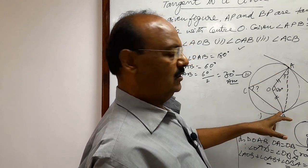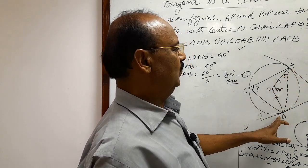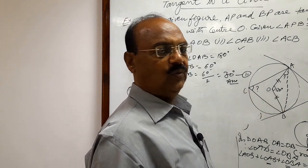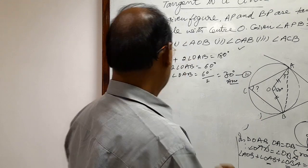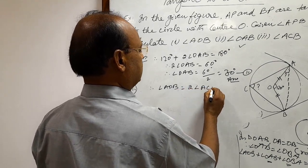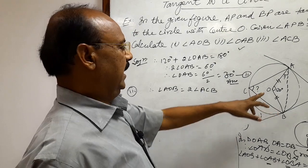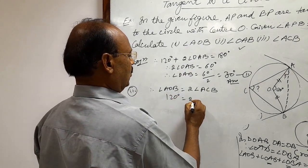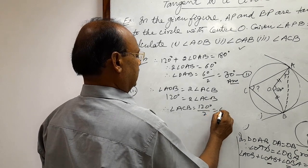We can consider chord AB, and on the same side of this chord, central angle AOB and angle ACB at point C on the circumference of the circle are both formed. We know that the central angle is twice the angle subtended on the same side at the circumference. So angle AOB equals twice angle ACB. Since AOB is 120 degrees, angle ACB equals 120 divided by 2, which is 60 degrees.